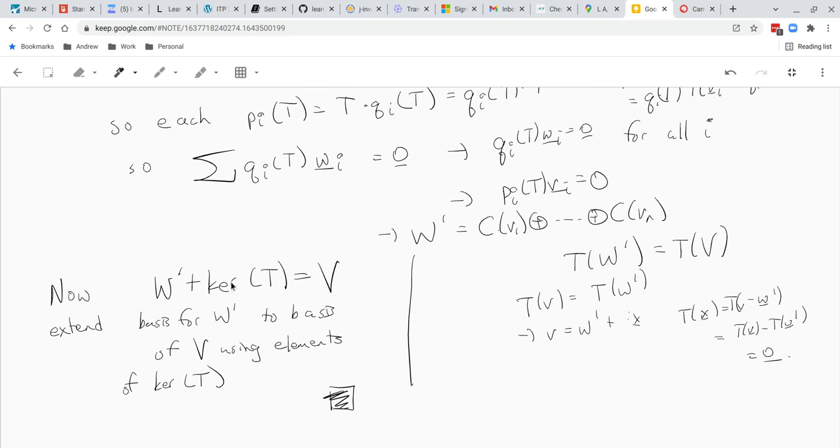And now the very end of the proof is to notice that W prime, which we constructed by induction, plus the kernel of T is all of V. Why? Well, notice that T of W prime is just T of V. And then from that you get that if you take a vector in V, you can write T of V as T of W prime. And that means that V minus W prime is in the kernel. So you can write V as W prime plus X where X is in the kernel, establishing this statement.